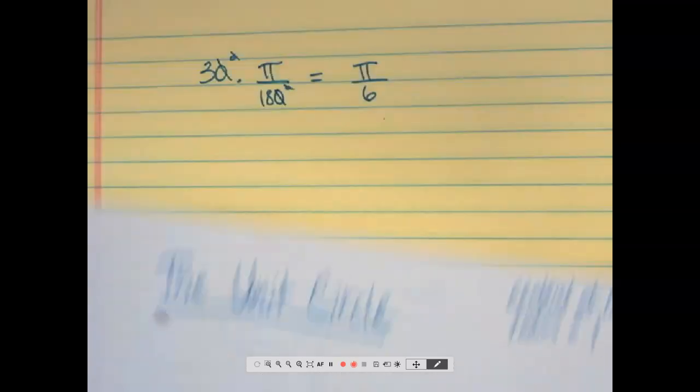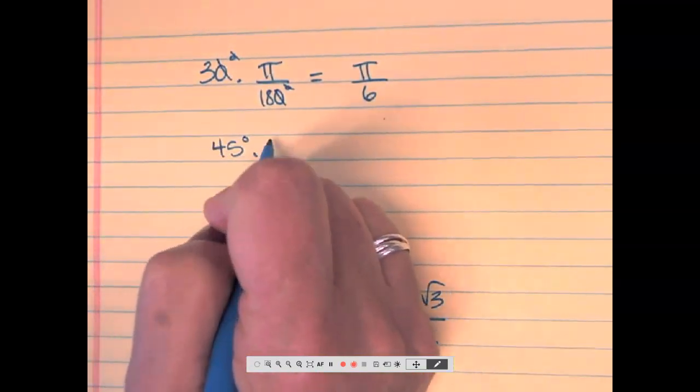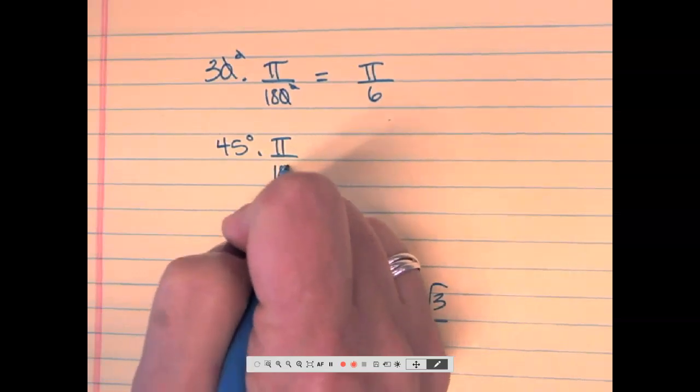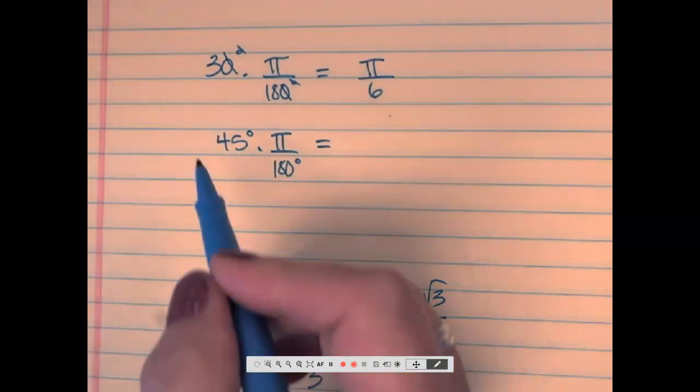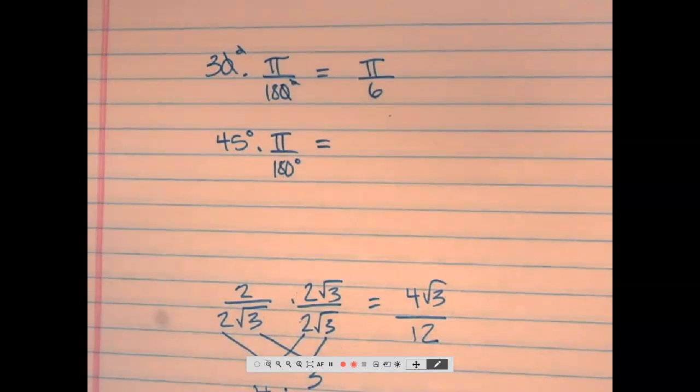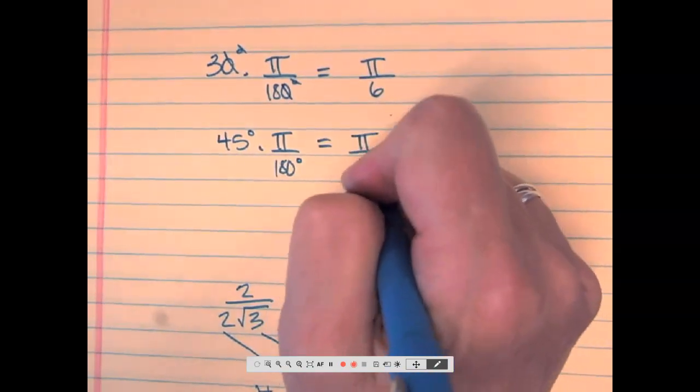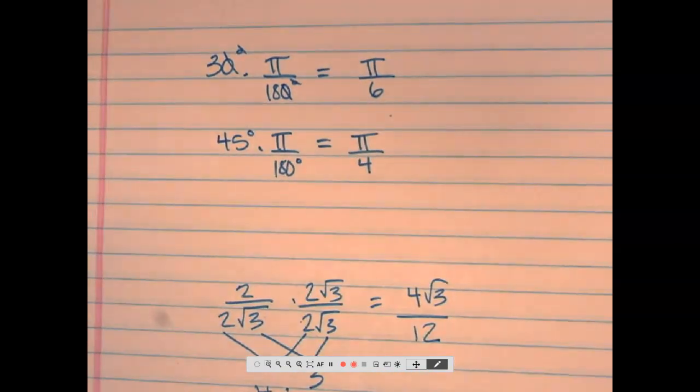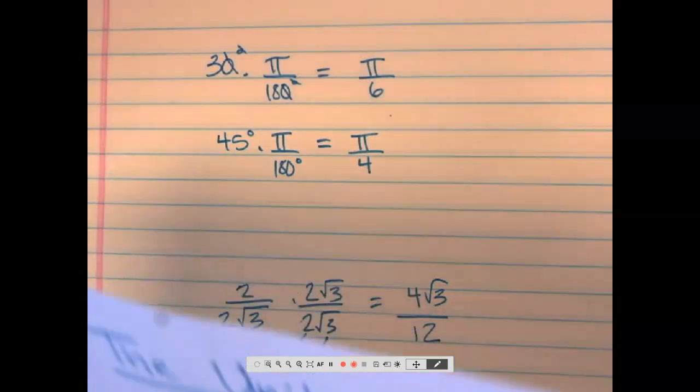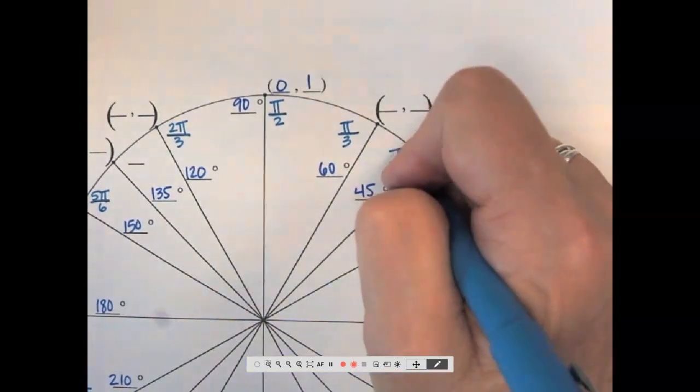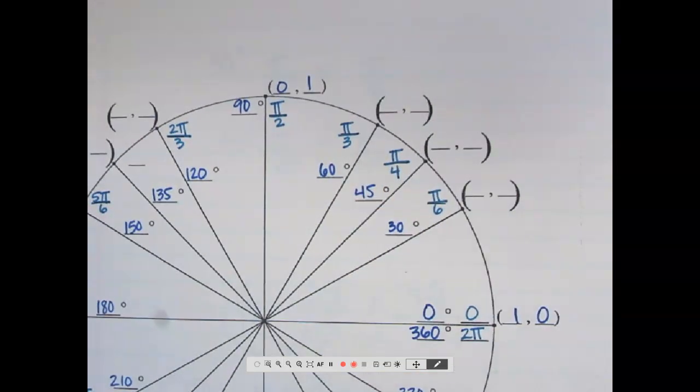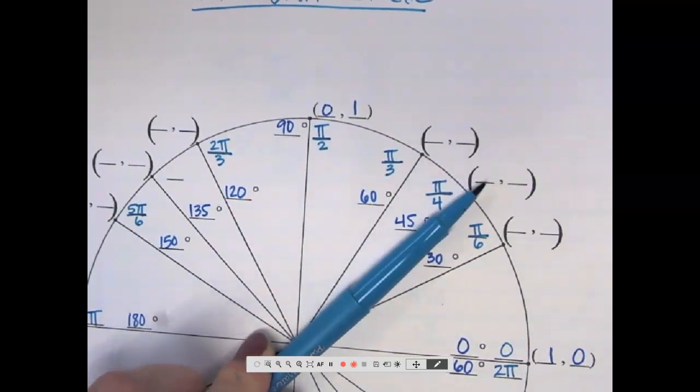45 are the only ones that are left. So if I want to convert 45 to radians, what does 45 over 180 reduce to? You should calculate if you need to. 1 fourth. So this is 1 pi over 4 or just pi over 4. So all of our 45 degrees will be increments of 1 fourth pi. So here we go. We have 1 fourth pi.